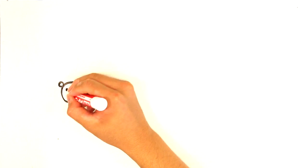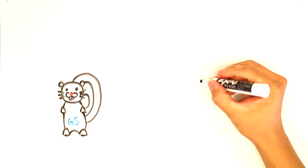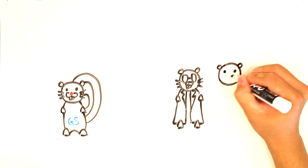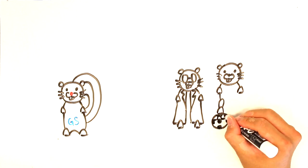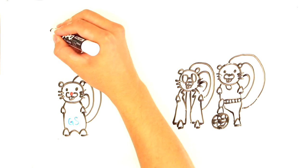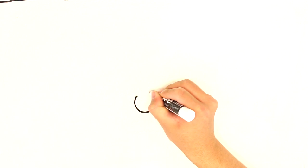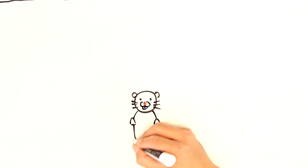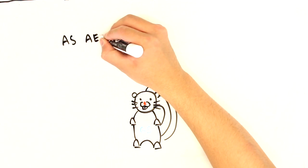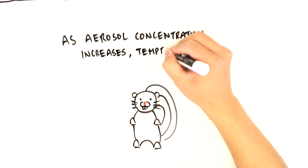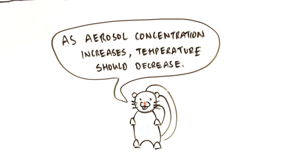This time, GrammarSquirrel checked with two of her other friends. She asked one with a science background, and one without, how they interpreted the meaning of the sentence. Unsurprisingly, they confirmed the different interpretations that her other friends had. So, rephrasing her sentence one final time, she says, as aerosol concentration increases, temperatures should decrease. And, again, the problem has disappeared.